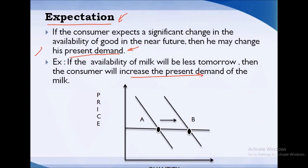If the availability of milk will be less tomorrow, then the consumer will increase his present demand. Here price is constant. Again taking price on y-axis and quantity on x-axis, you can see the demand curve has been shifted from this particular position to this particular position.